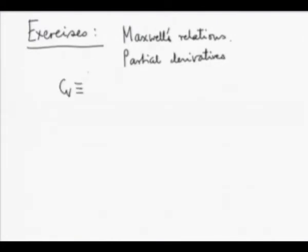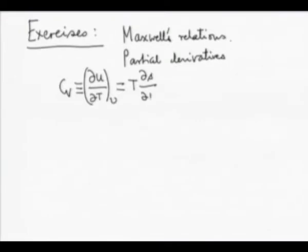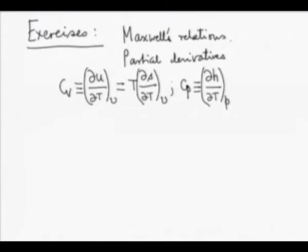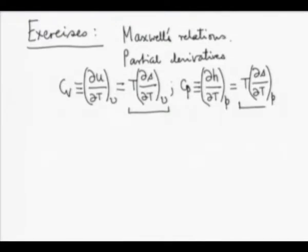We have shown that CV, which is defined to be the partial of U with respect to T at constant V, has been shown to be T times the partial of S with respect to T at constant V. Similarly, you should show and not hesitate to use that CP, which is defined to be the partial of H with respect to T at constant P, equals T times the partial of S with respect to T at constant P.